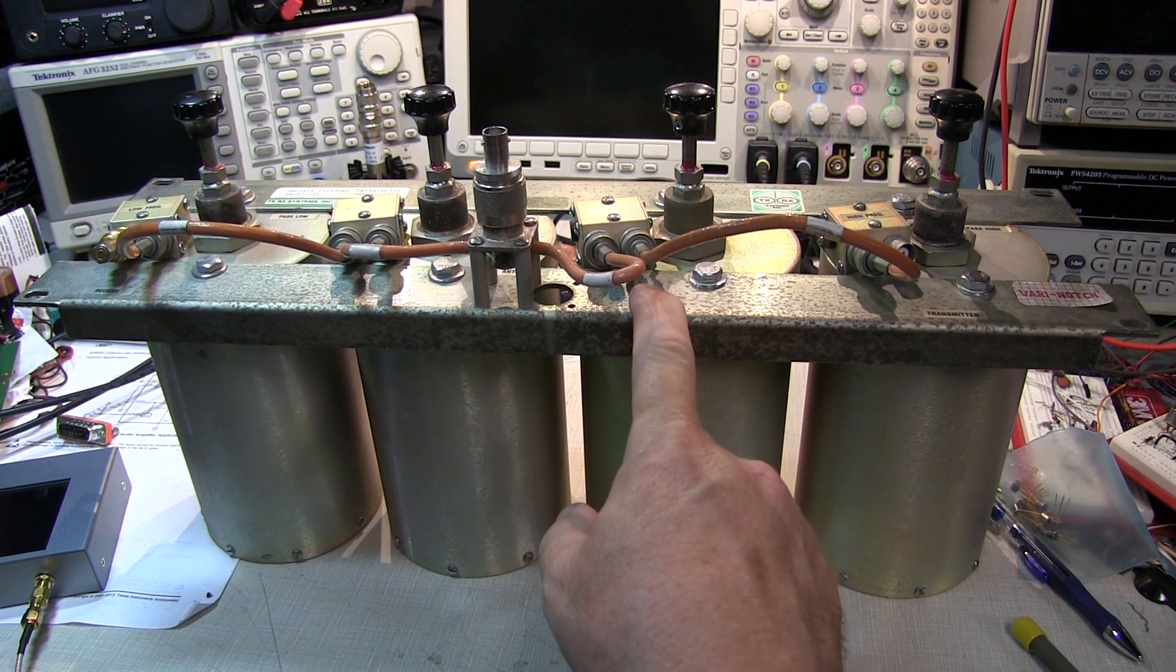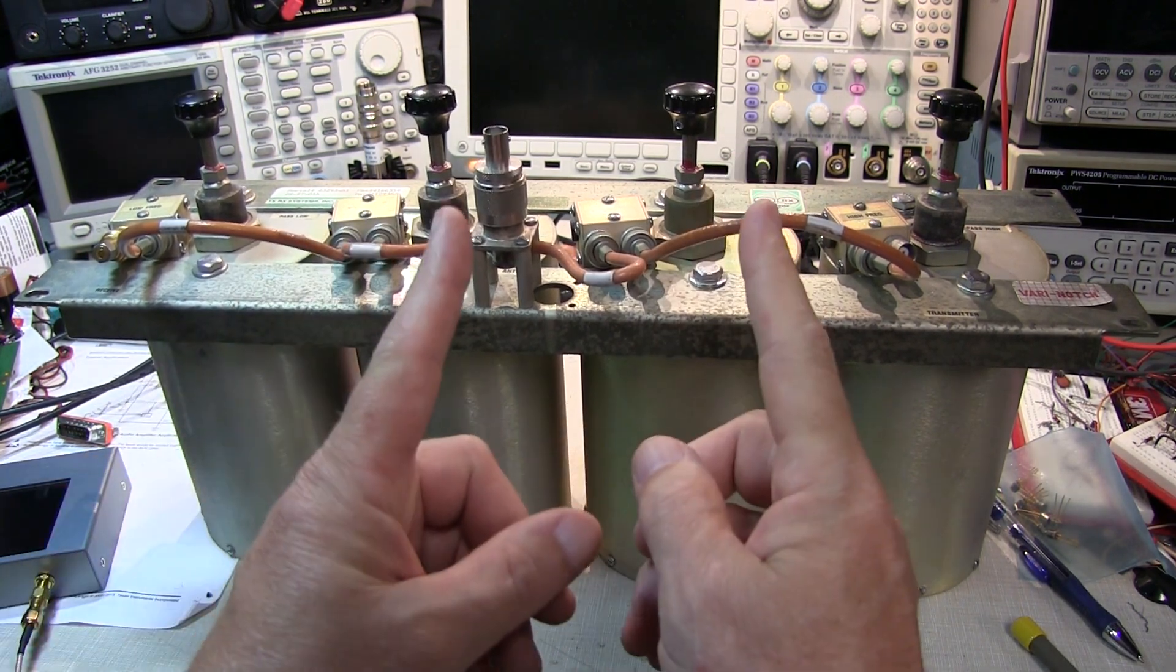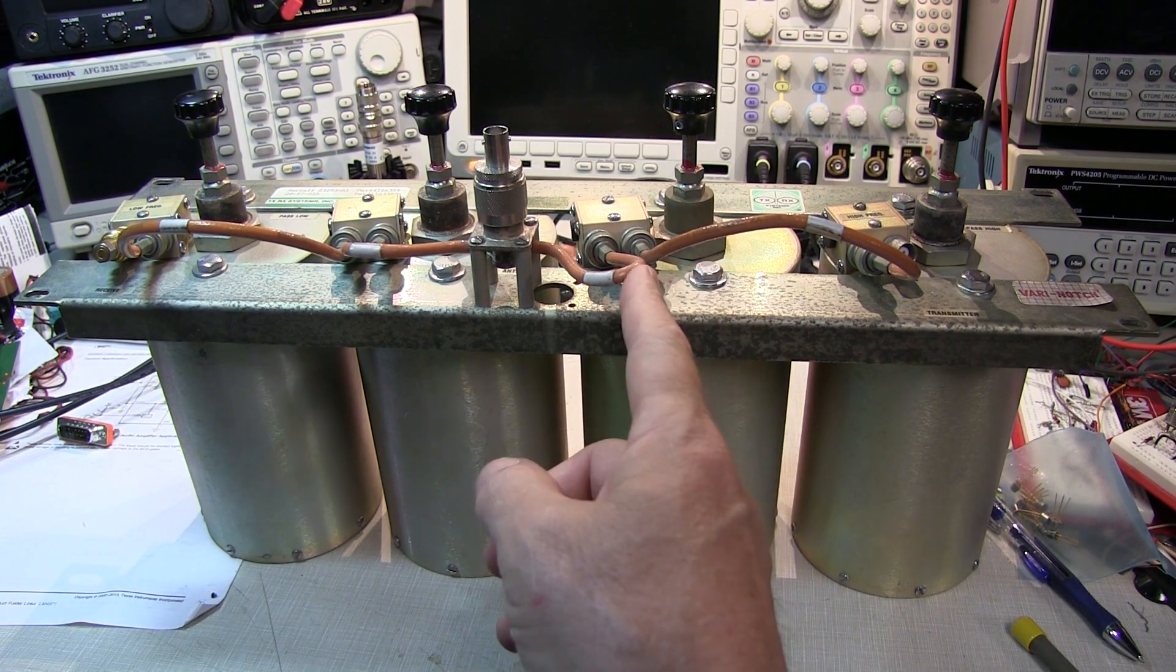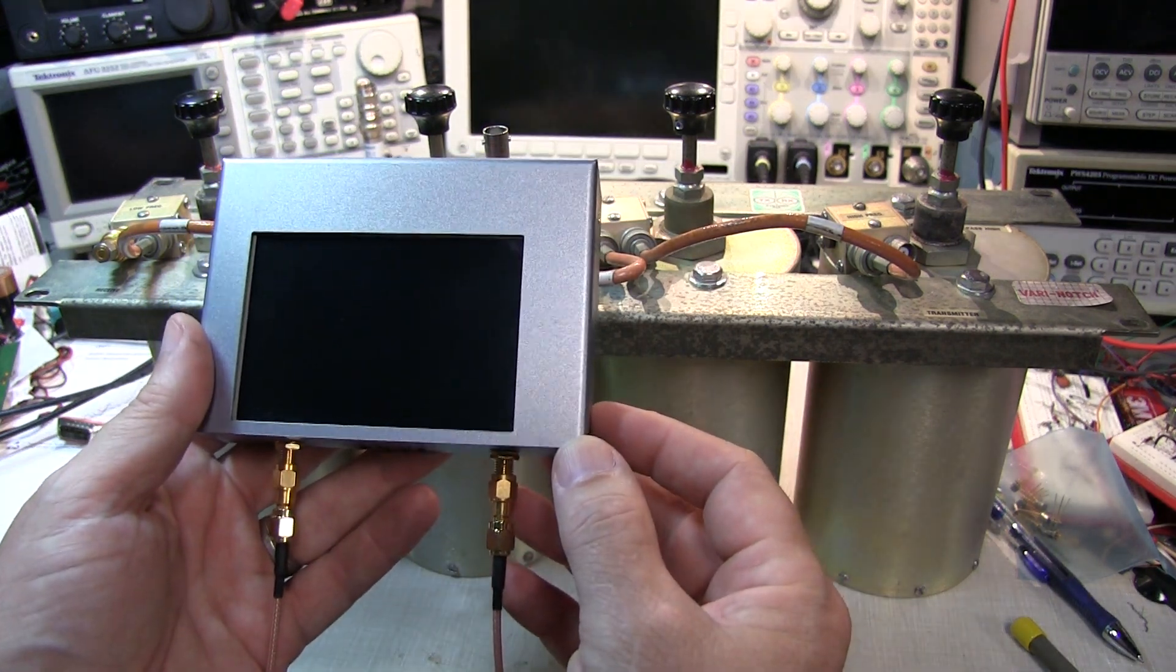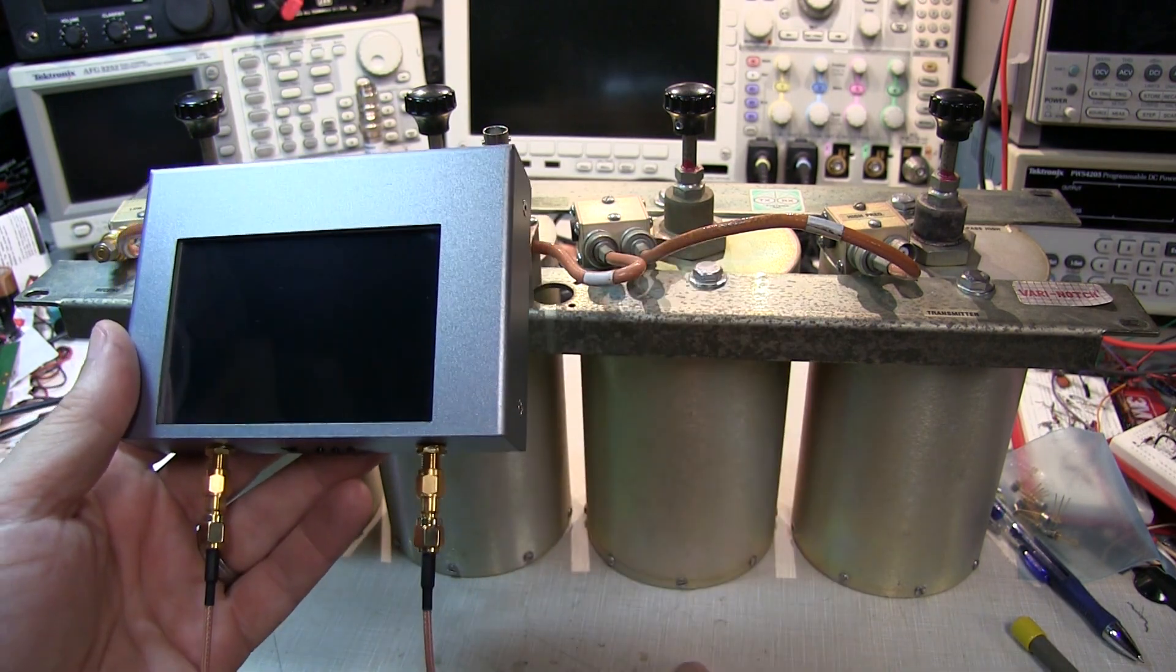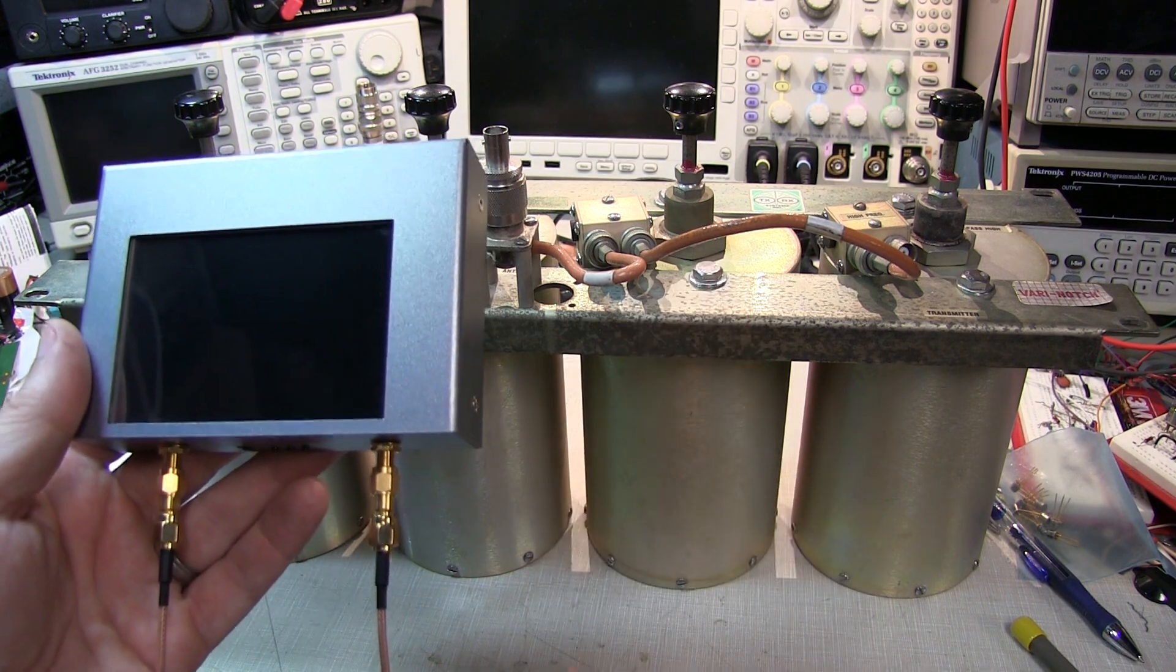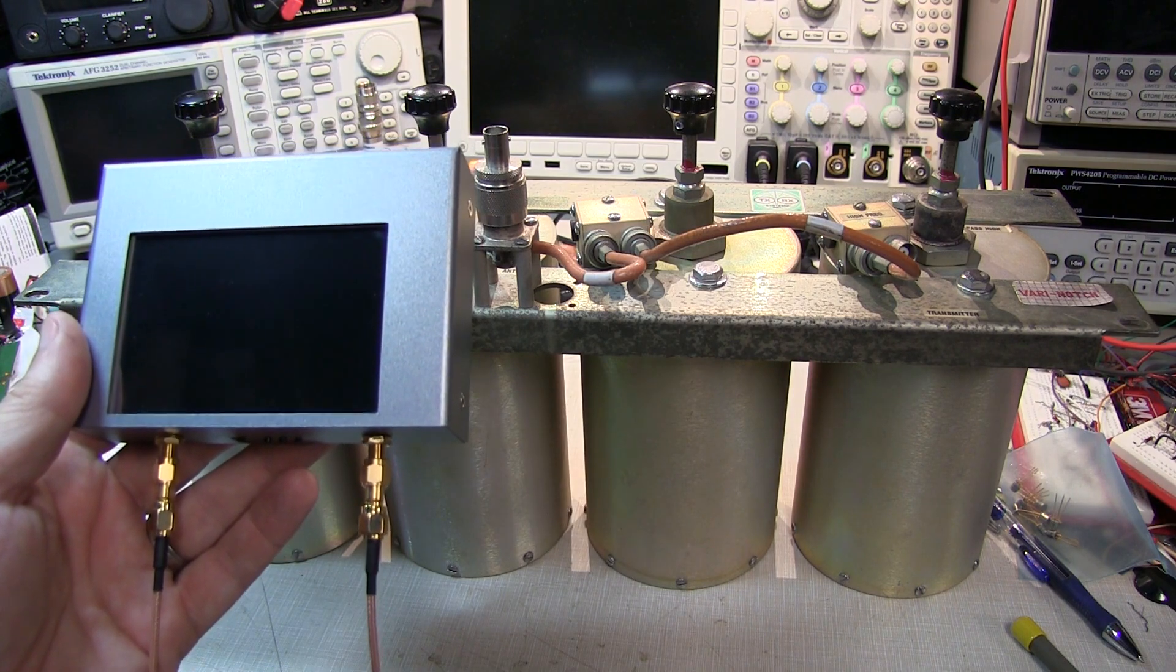This duplexer belongs to a friend who wants it retuned to a different pair of operating frequencies. I thought we'd take the opportunity to see how well we could retune this duplexer with the Nano VNA V2 plus 4. This is a very inexpensive VNA. After we finish tuning, we'll double check our result with a more professional VNA to see how close we got.